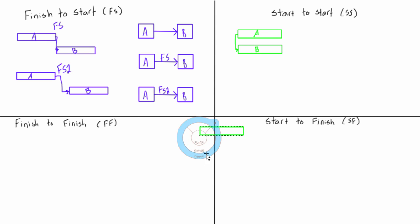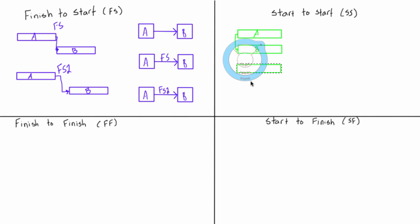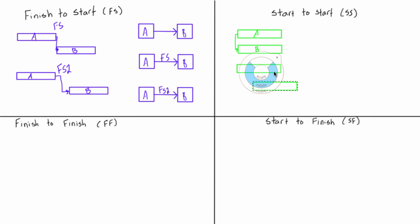If there was lag in this case, we would get something that looks more like this. We'd have activity A, and say we have a lag of two days — well then B could start two days after A has started. So we'd have activity A, we'd have activity B, and then from this point the relationship would be drawn just like that. This would be a start to start relationship, and with lag this would be a start to start 2, or whatever the lag is that we're seeing.